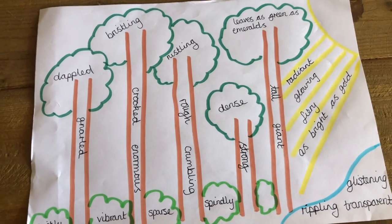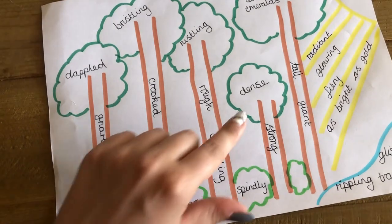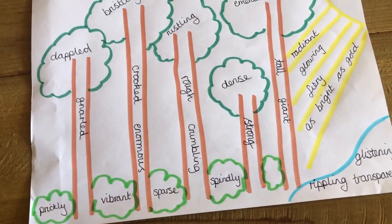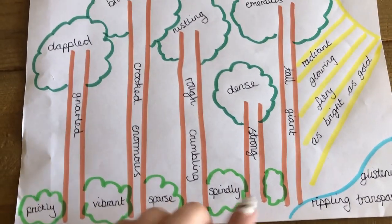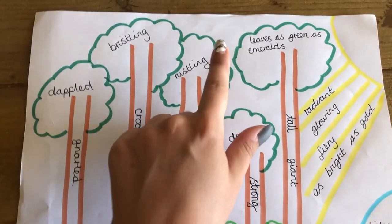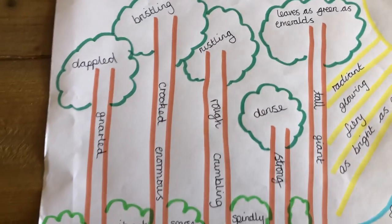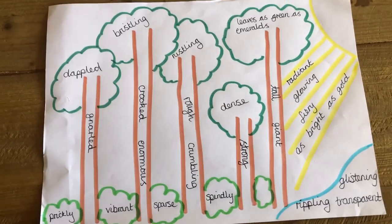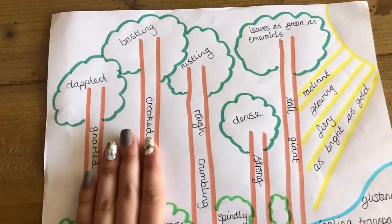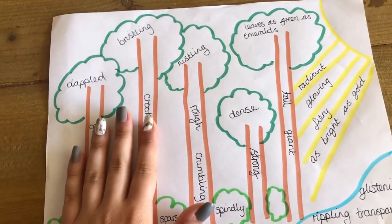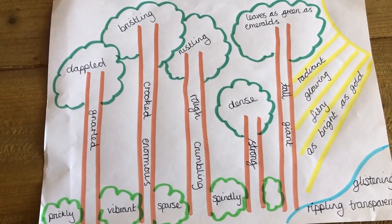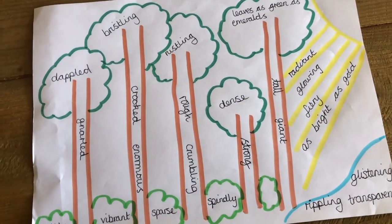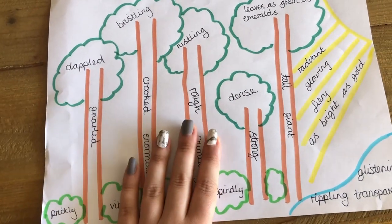Here is my finished adjective art. I've got gnarled tree trunks, crumbling bark, prickly and sparse bushes on the ground, rippling transparent glistening water, the sun as bright as gold, leaves as green as emeralds, the rustling noise of the leaves, and the dappled look of the leaves — which means lots of different colours. There is lots of description here, and you could use all of these adjectives and descriptive language to help you do a short setting description in sentences and even paragraphs to describe your wood, beach, sea scene, or space scene.